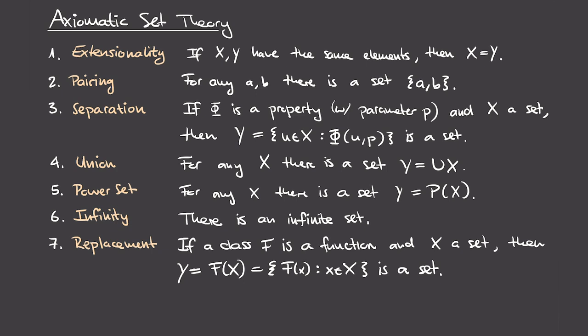The final three axioms are maybe a bit more complicated. Axiom 7 is called replacement, and it says that if a class F is a function — think of F as assigning elements in the domain to elements in the codomain — and moreover X is a set, then by this axiom the image of X under this function F is also a set. In other words, if we have some set we can start out with and we have a function that has that set as a domain, then the image of that function is also a set.